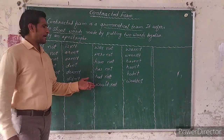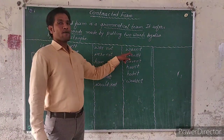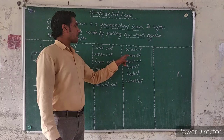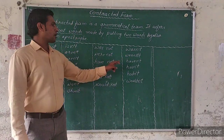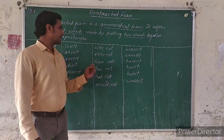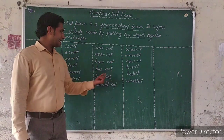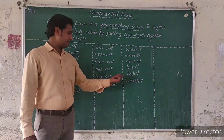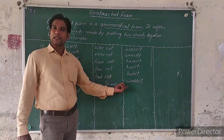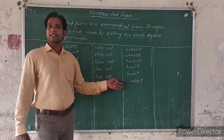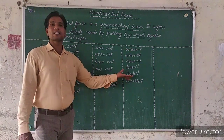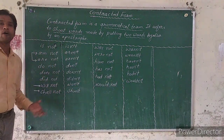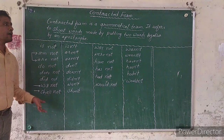In the same way, the remaining examples are: was not → wasn't, were not → weren't, have not → haven't, has not → hasn't, had not → hadn't, and could not → couldn't. These are all examples of contracted forms.